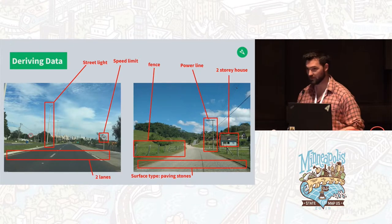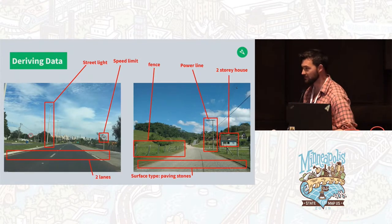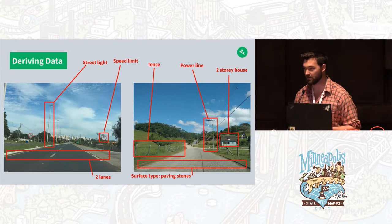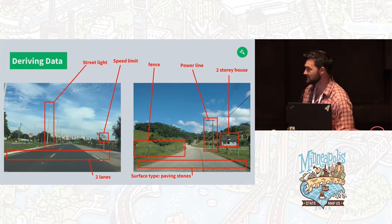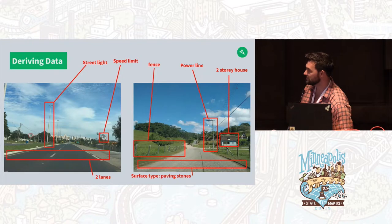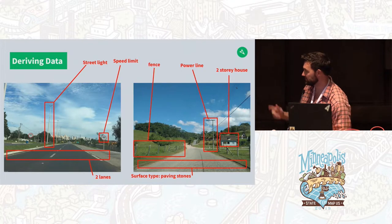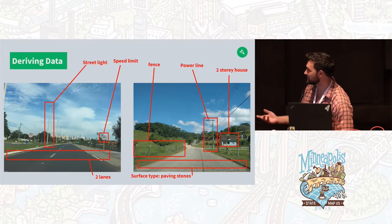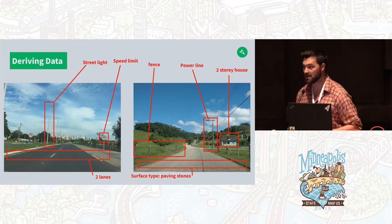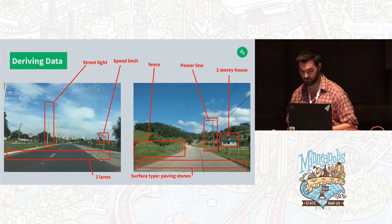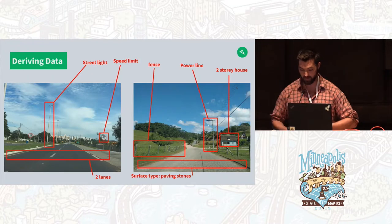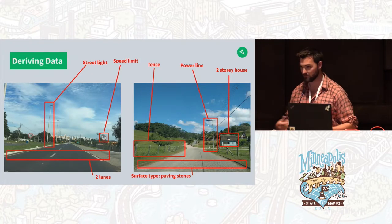When you're using Mapillary as a source, one of the ways you can do it is just deriving data with your own eyes from the imagery. On the left, we don't need anything besides this picture and its geolocation to start saying what the speed limit is on this road, whether or not it's lit with streetlights, and even the number of lanes. On the right side, we can see there's a fence parallel to the road, power lines, the number of stories on a house, and that the surface material of the road is paving stones. There's a lot of information not only from one photo but from series of these across broad areas.